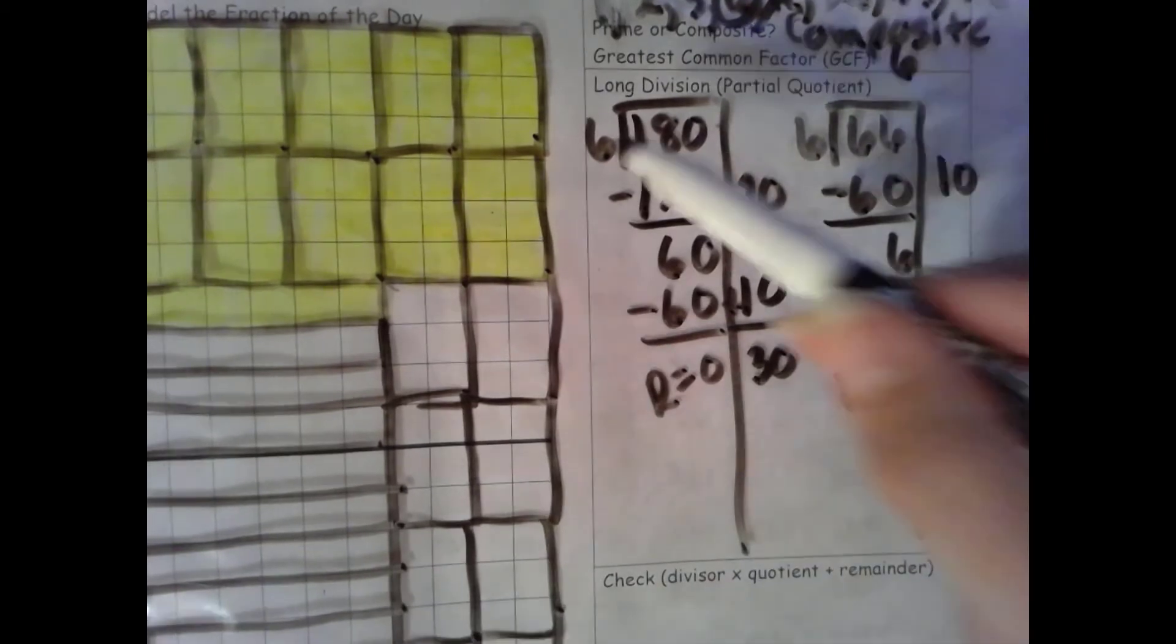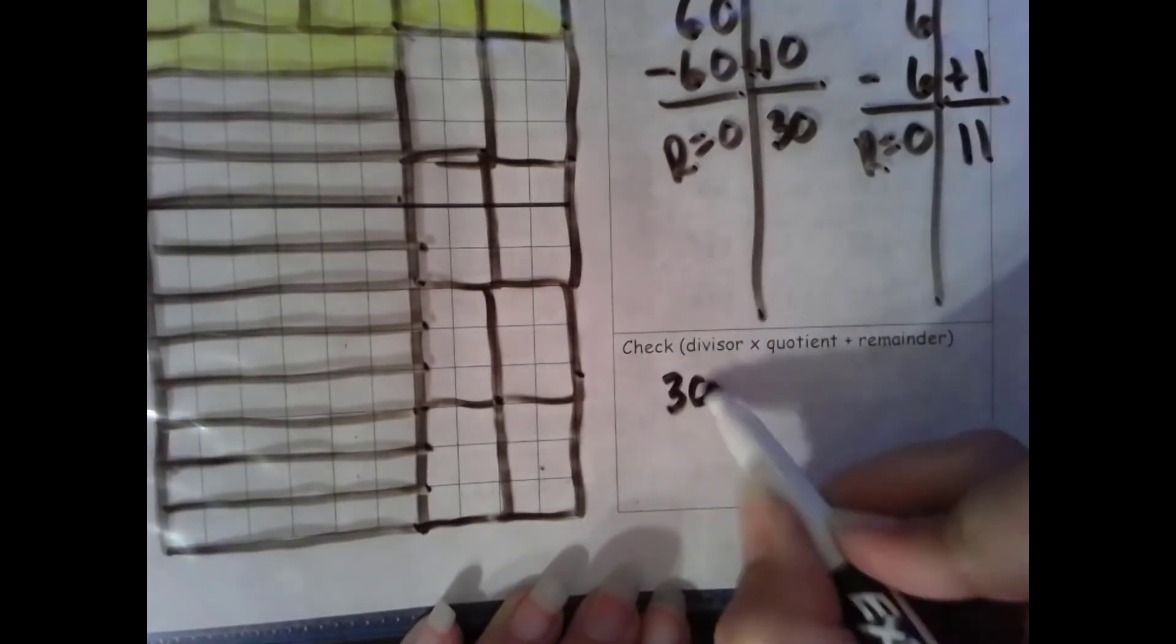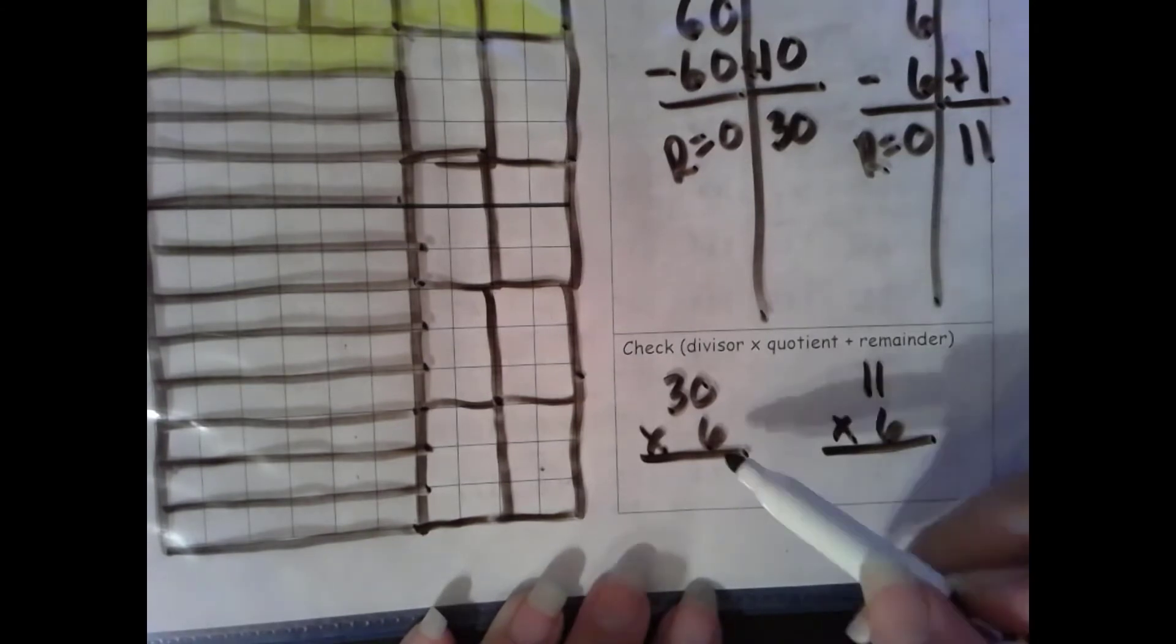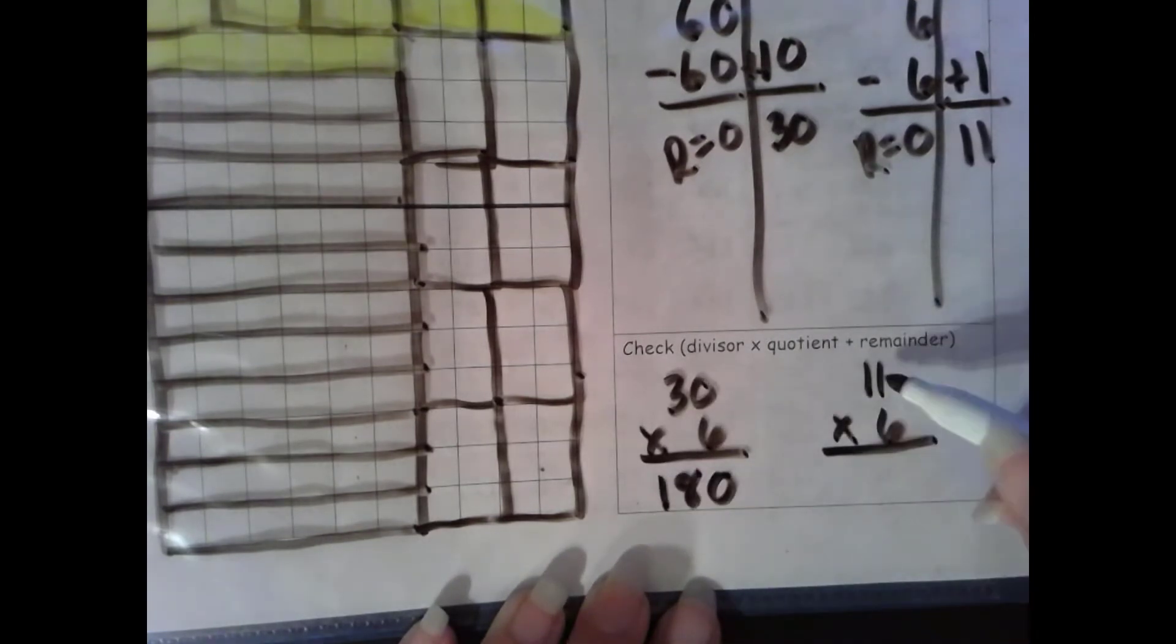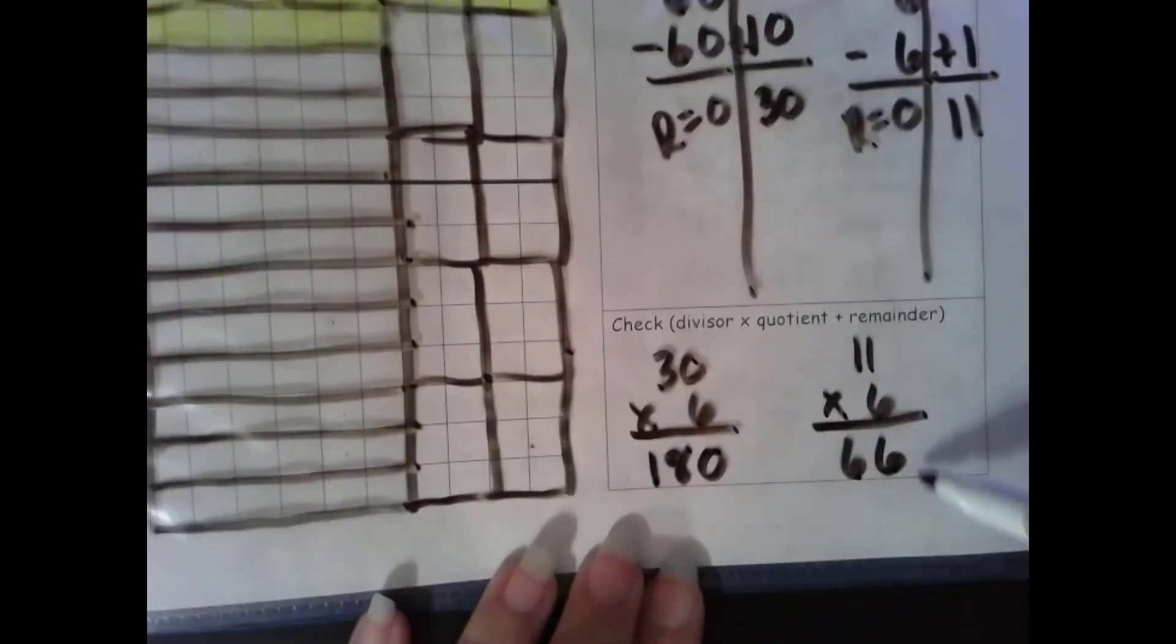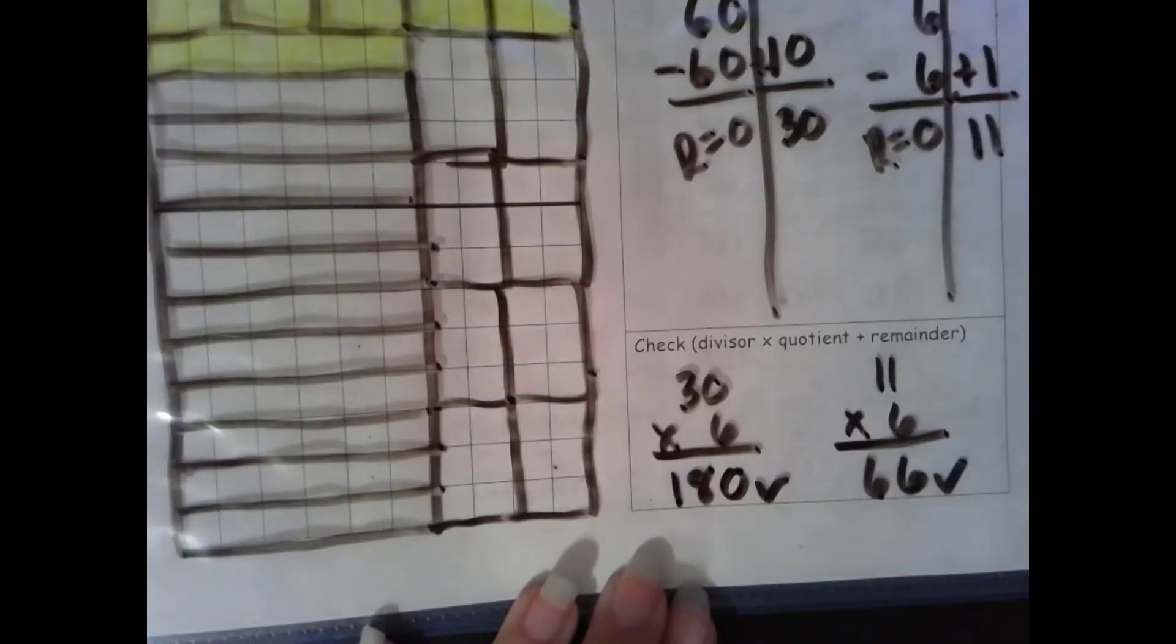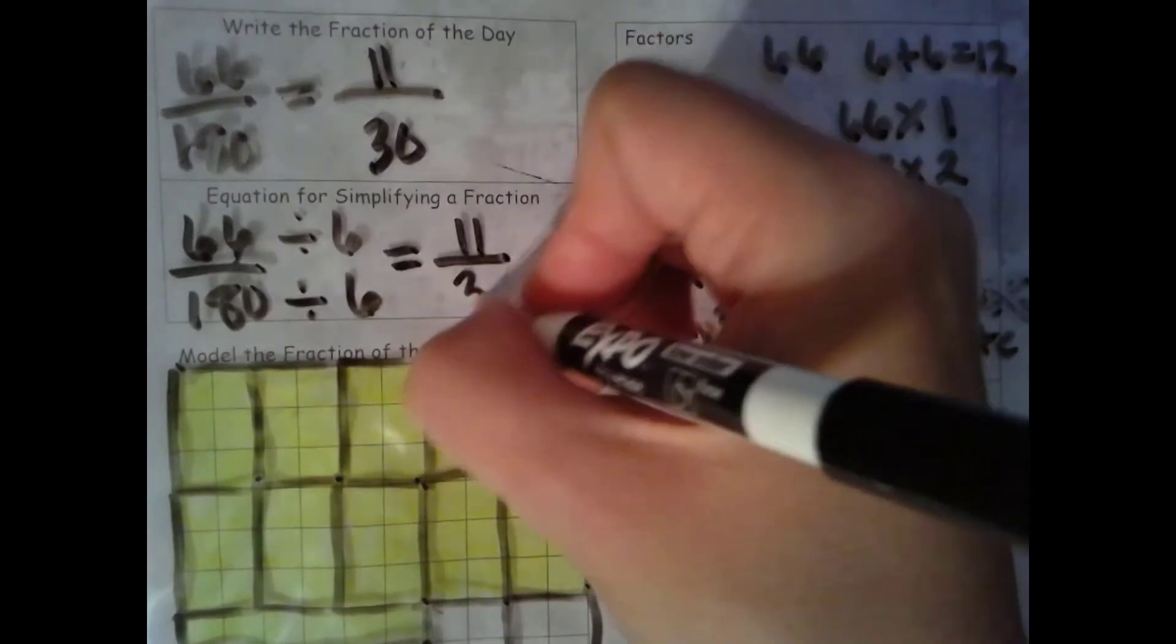We still need to check. Divisor times quotient plus remainder. Since our remainder is 0 for both, the identity property of addition says when you add 0 it stays the same. 6 groups of 3 tens is 18 tens. 6 groups of 1 is 6, 6 groups of 10 is 6 tens. 66 that matches our dividend so that checks. 180 matches our dividend so that checks. That means our numerator is definitely 11 and our denominator is definitely 30.